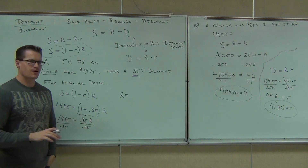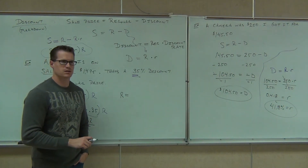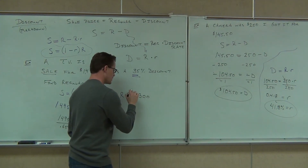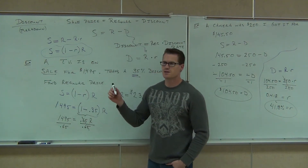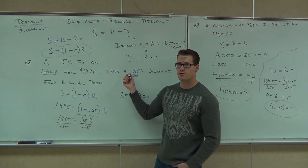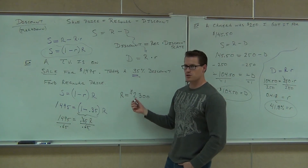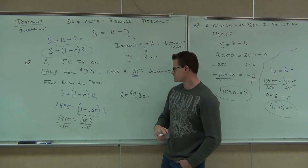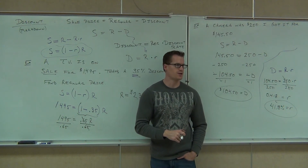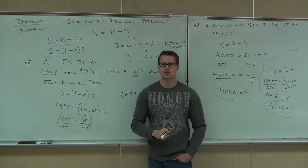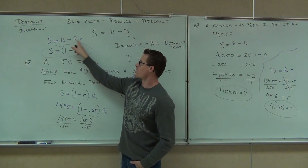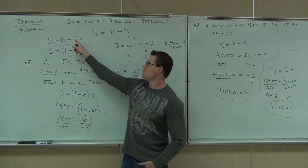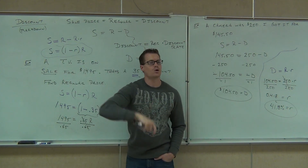If you divide $1,495 by 0.65, how much are you going to get? $2,300. So this says: if your TV is on sale for $1,495 and they're telling you it's 35% off, the regular price better be $2,300 — otherwise they're saying it's more of a sale than it really is. About the '1' in the formula: we factored out the big R. R divided by R is 1, and R times little r divided by R is little r. If you distribute, it gives you that back again — that R is a product of the R right there. You're dividing R by R, that's where the 1 comes from.